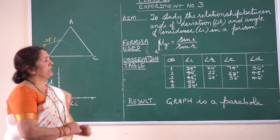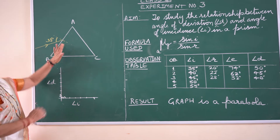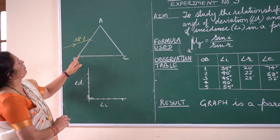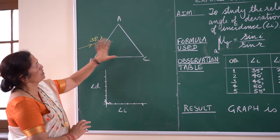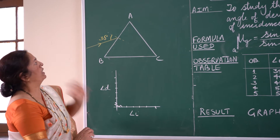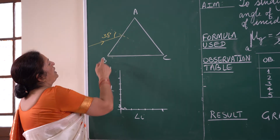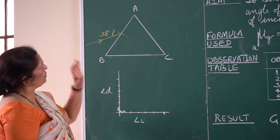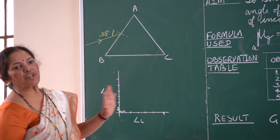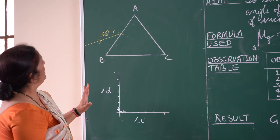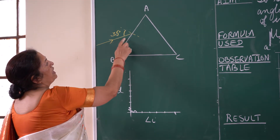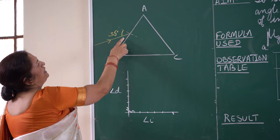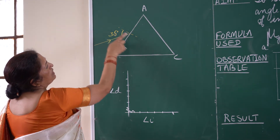We'll take a plain sheet of paper and draw the outline of the glass prism as shown on the board here, indicating ABC — that means the triangular portion of the prism we are going to draw on your plain sheet of paper.